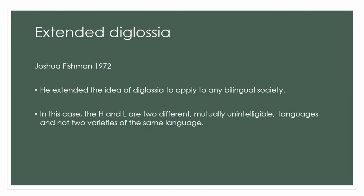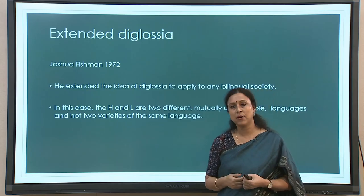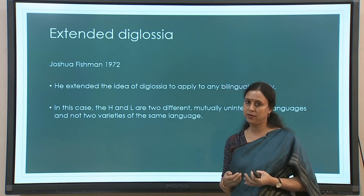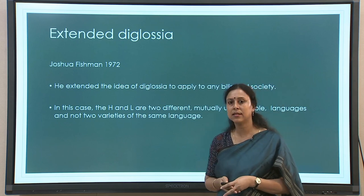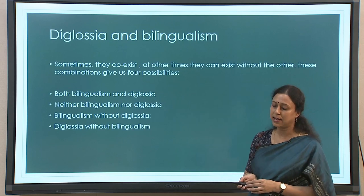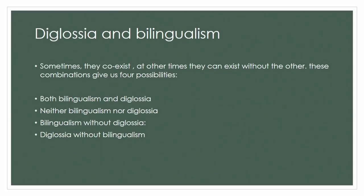This idea was extended by Joshua Fishman in 1972 into what is called extended diglossia. He extended it to include different languages: in a bilingual society, the more powerful language will have the higher status, while the weaker group's language will be used for colloquial, everyday purposes. So in extended diglossia, the high and low varieties are two different languages. Importantly, diglossia does not necessarily require bilingualism, but they often co-occur. Given whether they coexist or not, we can have four different possibilities: a society can have both bilingualism and diglossia, neither, bilingualism without diglossia, or diglossia without bilingualism.